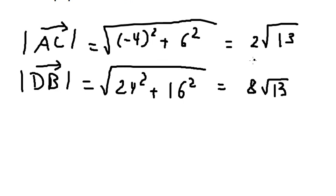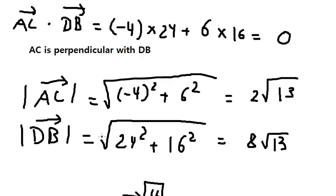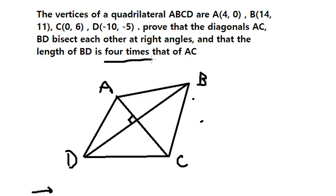Now we can see that this one divided by this one we will have number 4, because the square root cancels, 8 divided by 2 we have 4. And we just proved this.